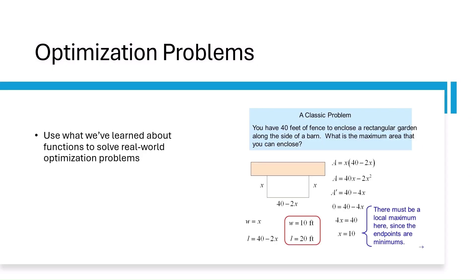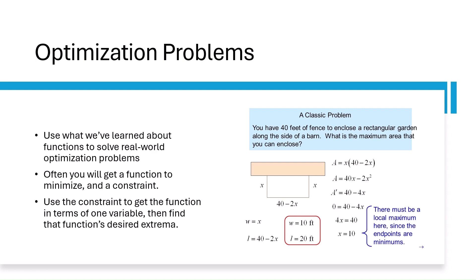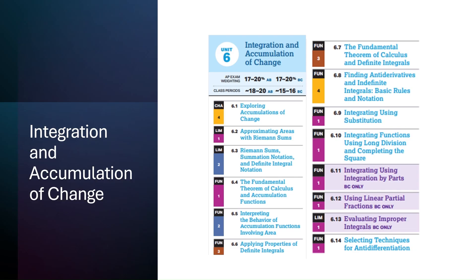The skills we've learned so far can be applied to optimization problems. Usually with an optimization problem, you'll get two equations — one that you're trying to maximize or minimize, and the other that gives you a constraint on two variables. You use the constraint to get the first function in terms of one variable, and then you can use the first derivative or second derivative test to find that function's extrema. From there, you find the global or local max or min and solve whatever the question is asking.